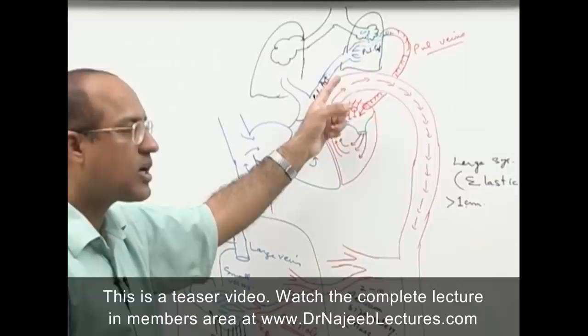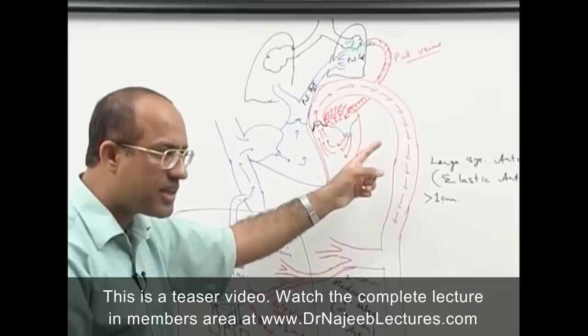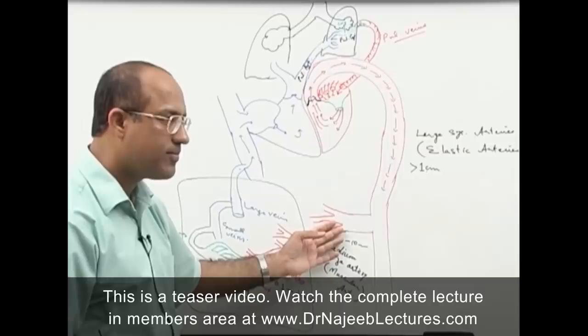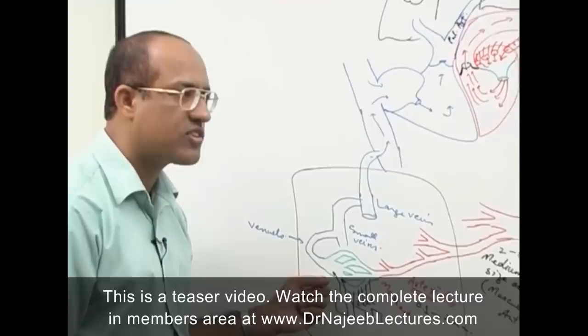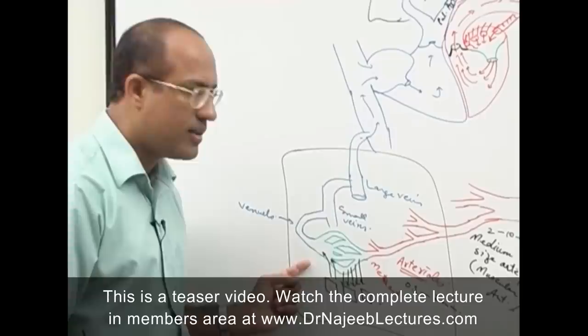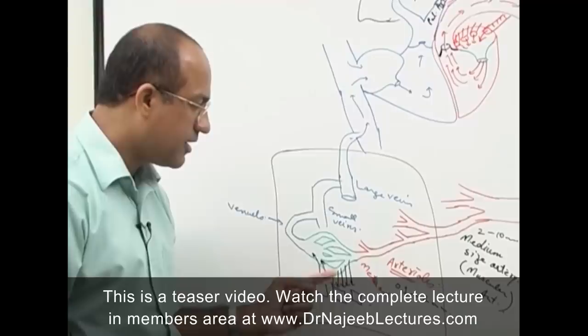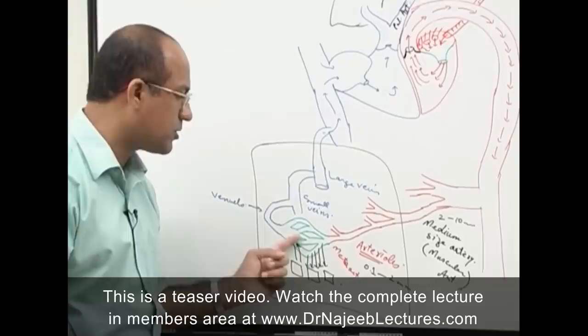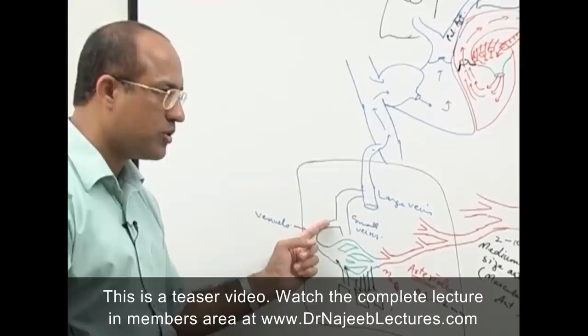Aorta and its major branches are called elastic arteries. Blood from these large elastic arteries goes into medium-sized muscular arteries, then to arterioles, and then to the capillaries — the exchange area where substances like oxygen, glucose, amino acids, and hormones shift from blood to tissue cells, and carbon dioxide and waste products come back into the capillaries. Blood then moves to the venules, small veins, large veins, vena cava, and back to the right heart.